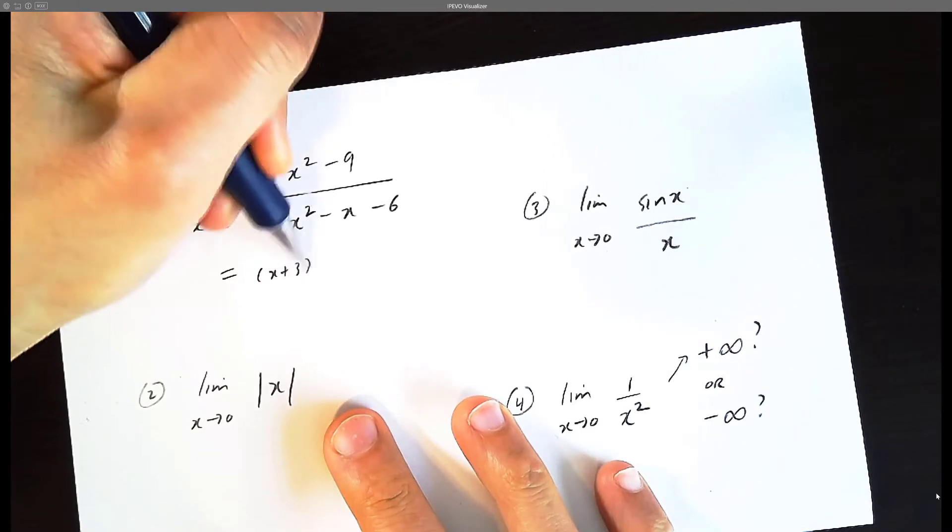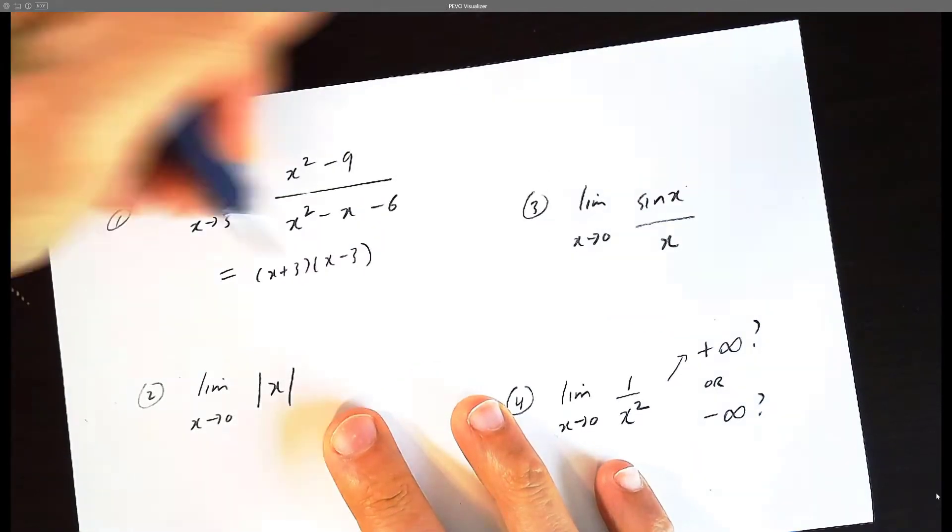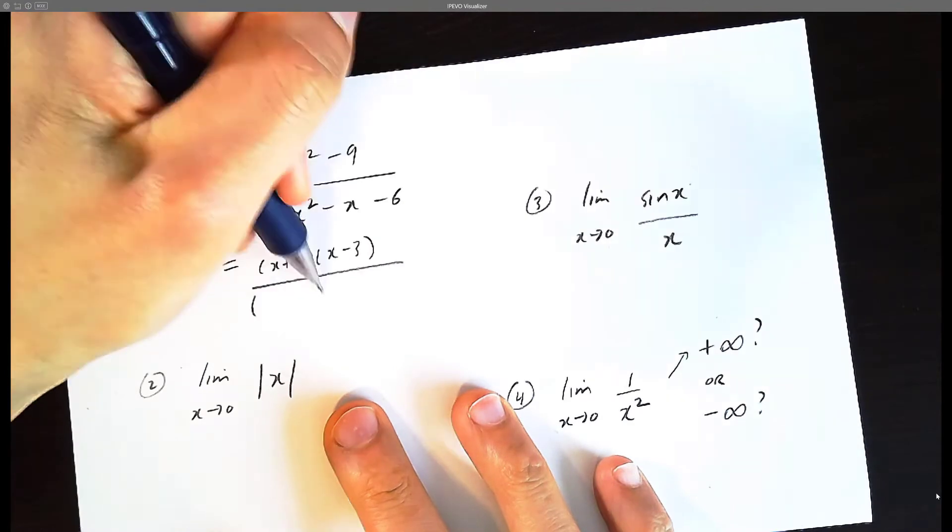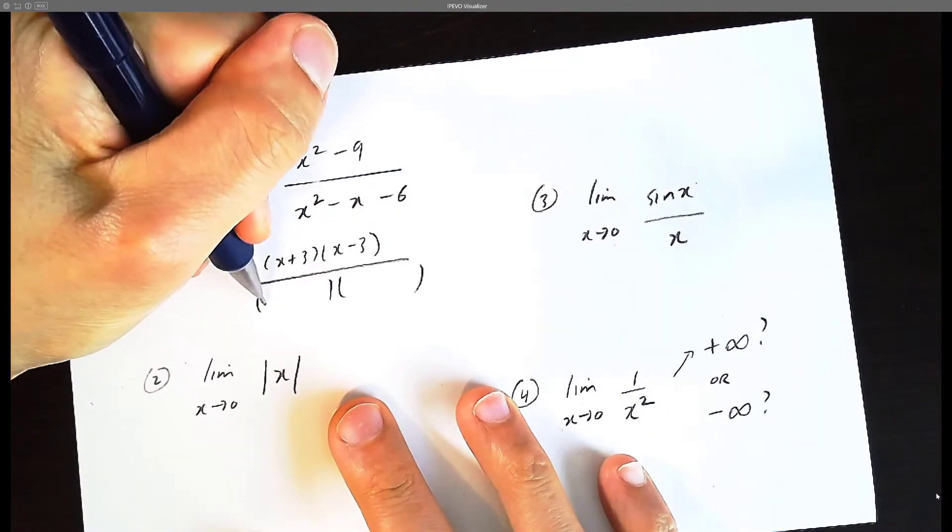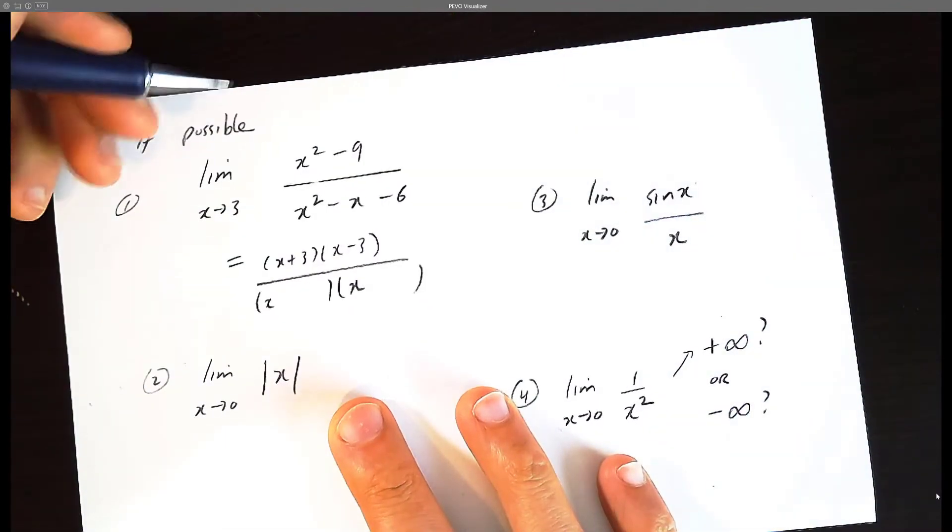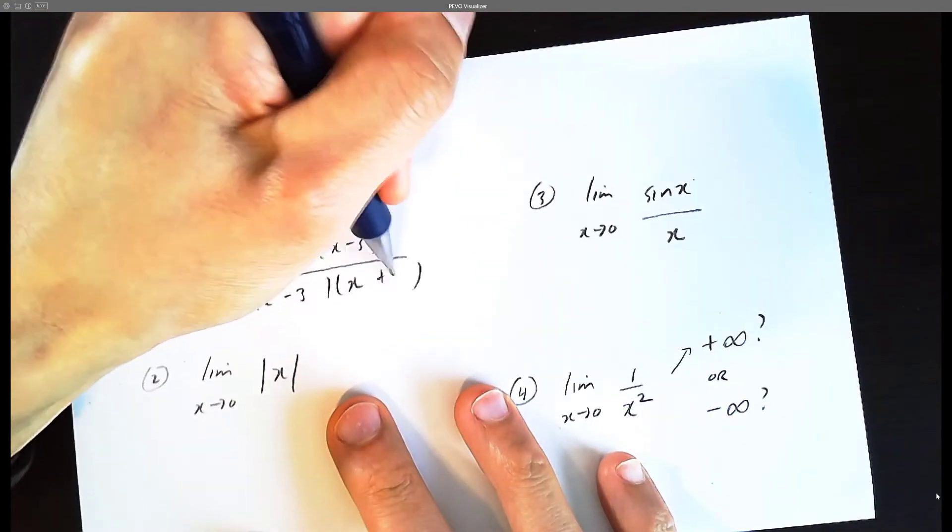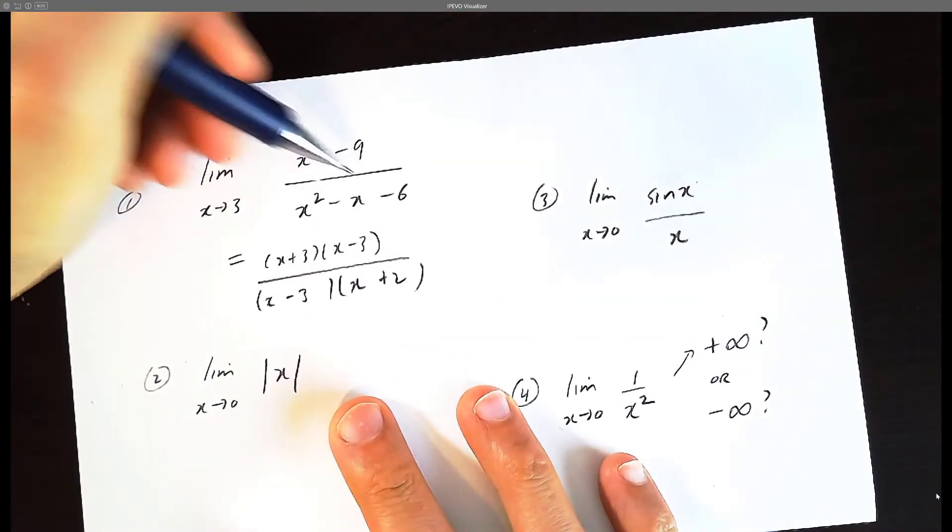x plus 3, x minus 3 is called difference of squares factoring, and the bottom is called trinomial factoring, which you learned in previous math. And we're going to say minus 3 plus 2 would be correct.